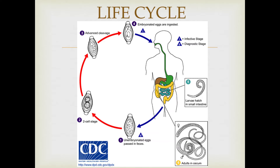Following ingestion, the eggs actually hatch in the small intestines and they release larvae that then mature and develop in the colon. The adult worms are typically 4 cm in length and they actually live in the cecum as well as the ascending colon. These adult worms are fixed at that location with their anterior portions — the hair-like part of the worm — threaded or embedded into the mucosa.